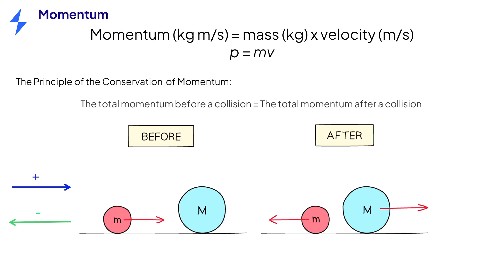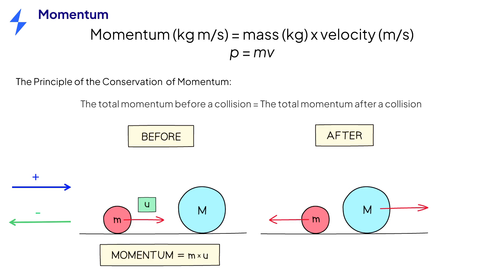The red object of mass little m is moving towards a stationary object of mass big M. The stationary mass has an initial velocity of zero, so an initial momentum of zero. The red object has an initial velocity of little u, so the momentum before the collision is little m times little u.